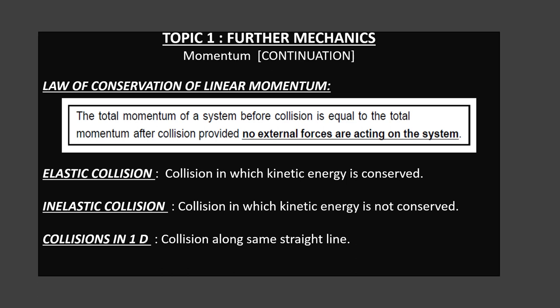Before we step into today's topic, let us have a quick glance at what we learnt in the previous class. The first important thing is the law of conservation of momentum: the total momentum of a system before collision equals the total momentum after collision, provided no external force is acting. We also saw two types of collision: elastic collision, where kinetic energy is conserved; and inelastic collision, where kinetic energy is not conserved. We analyzed these collisions in 1D — collision along the same straight line.